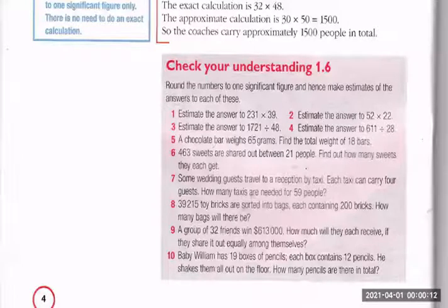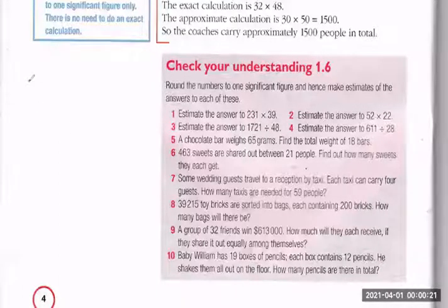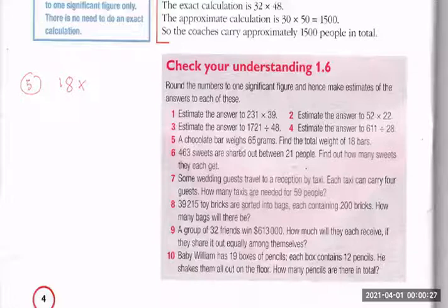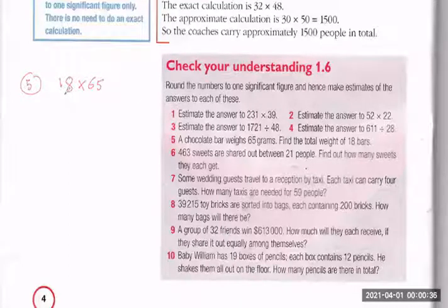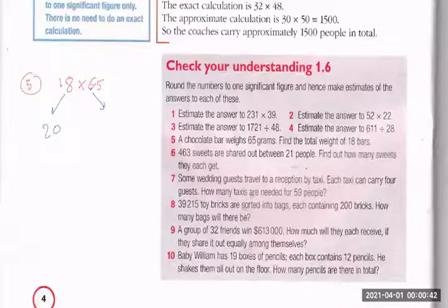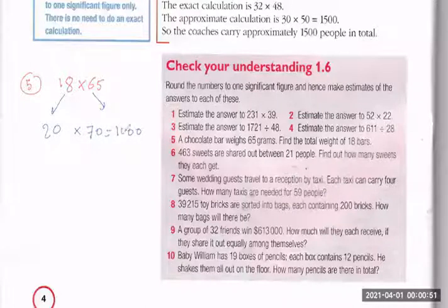Question number five: A chocolate bar weighs 65 grams. Find the total weight of 18 bars. So it's 18 times 65. To estimate, round each to one significant figure: 18 becomes 20, and 65 becomes 70. So 20 times 70 — two zeros, 2 times 7 is 14 — gives 1400 grams.